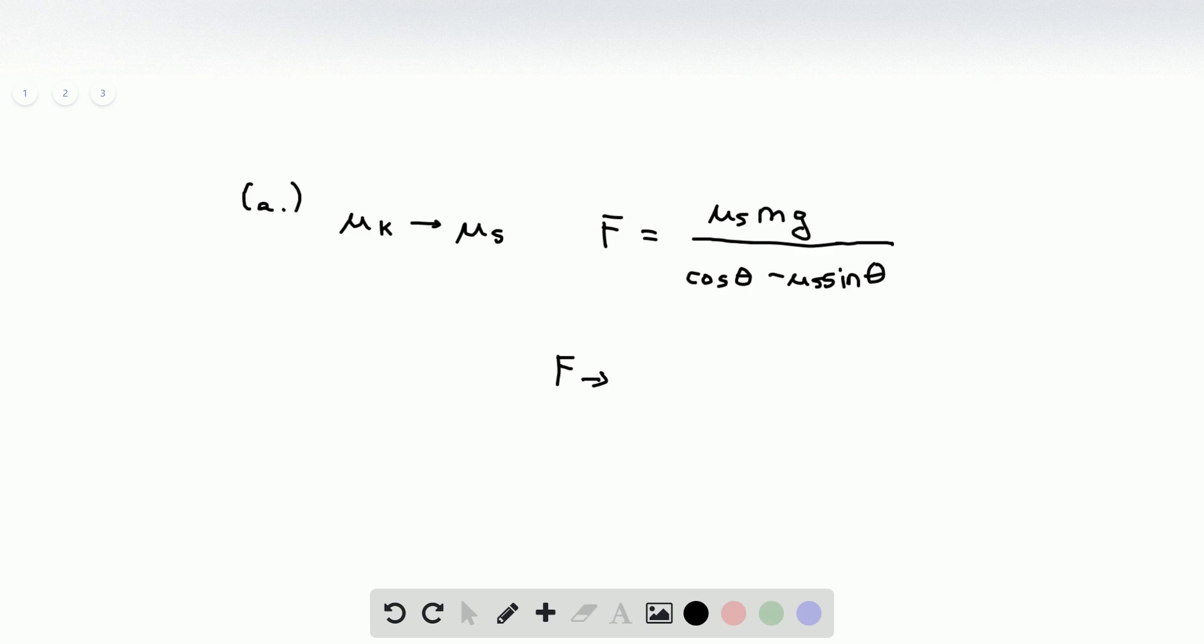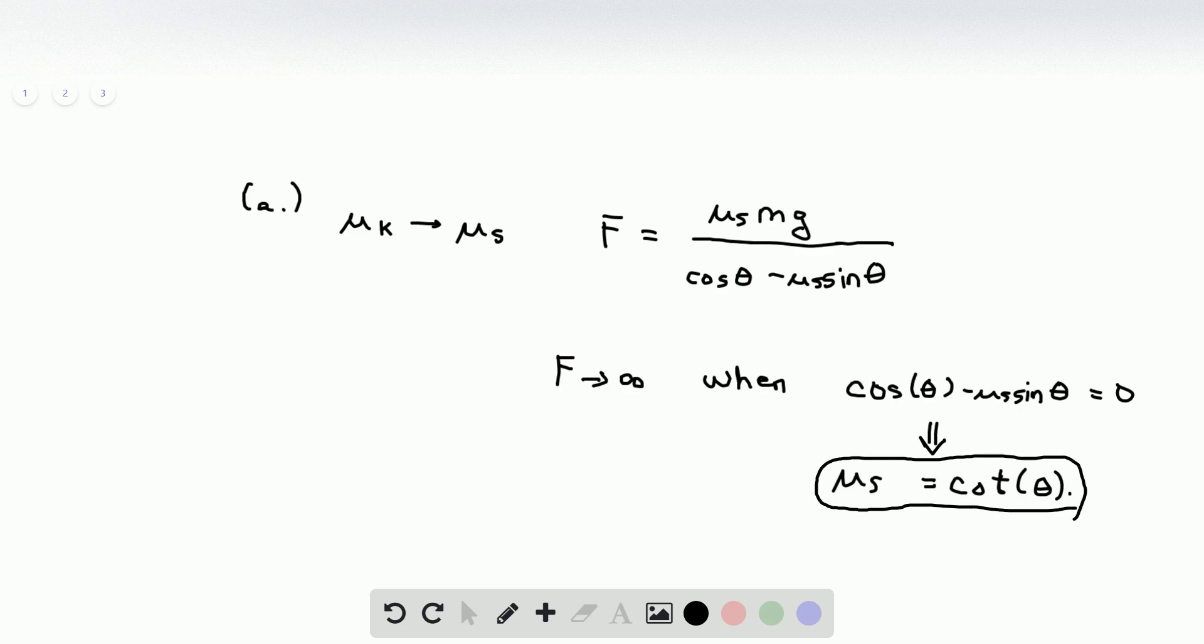Now F goes to infinity when the denominator of this expression goes to zero, so when cosine theta minus μs sine theta is equal to zero. Solving this for the coefficient of static friction gives a value of μs equals cotangent of theta, and that is the value they're looking for.